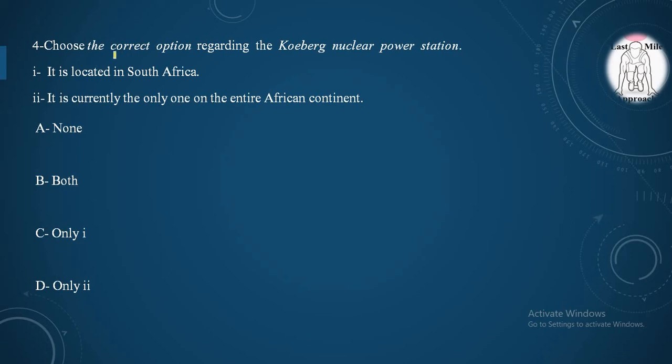Fourth question. Choose the correct option regarding the Koeberg nuclear power station. First statement. It is located in South Africa. Yes. First statement is true. Second statement. It is currently the only one on the entire African continent. Yes. It is also correct. So we have to mark the correct option.